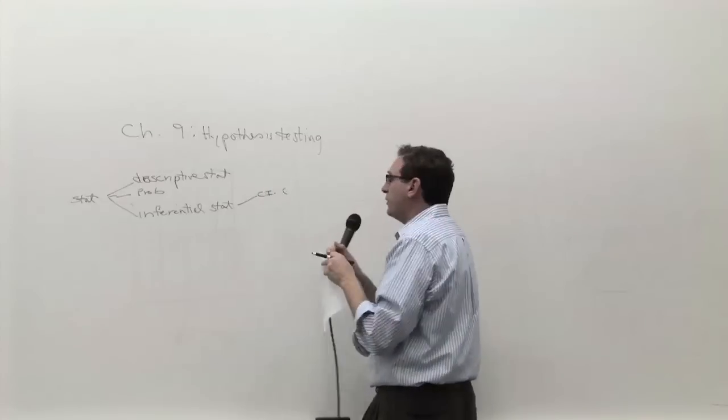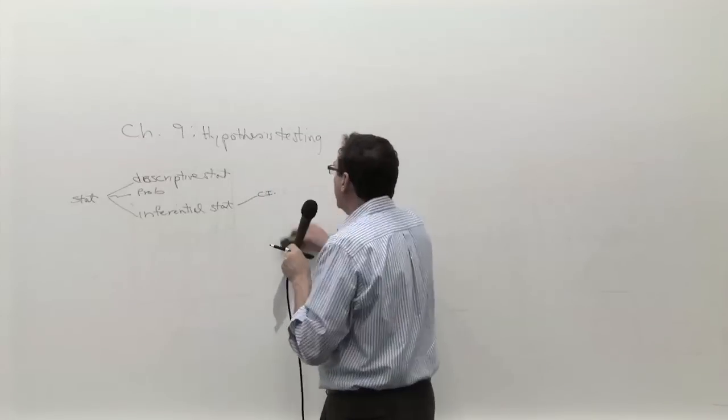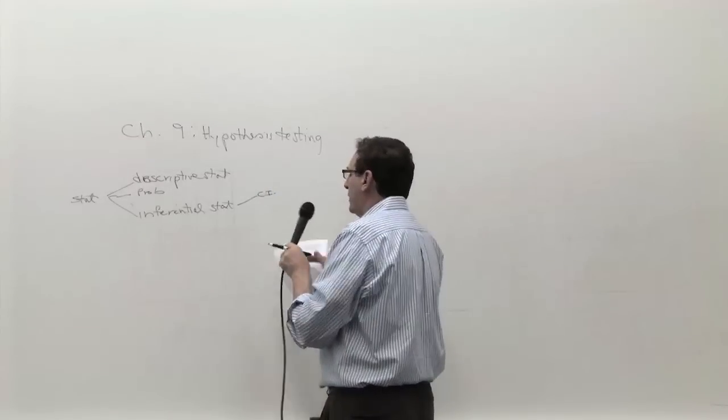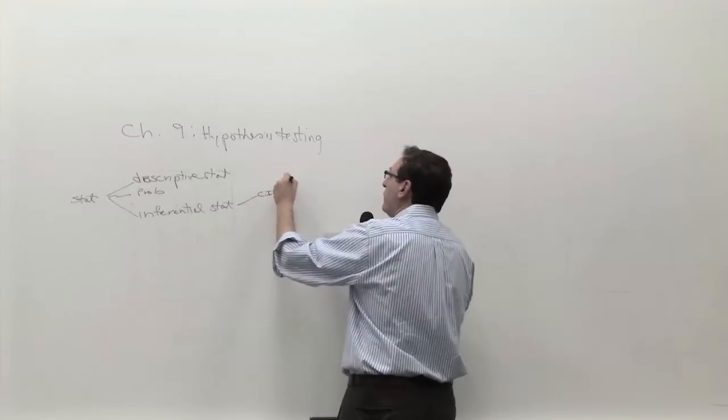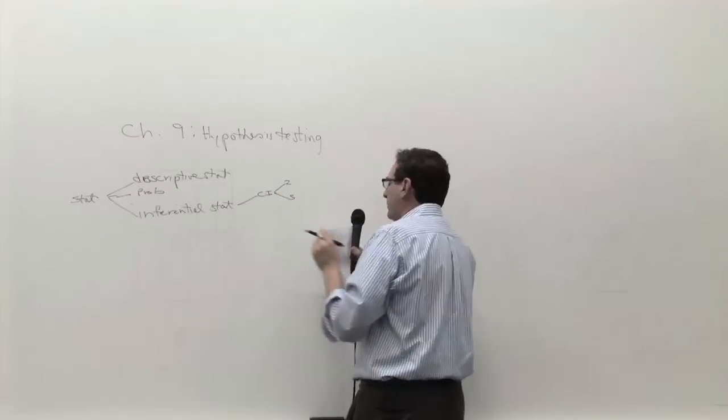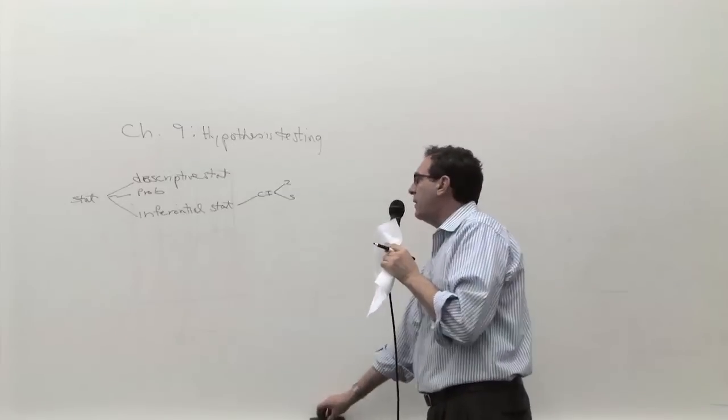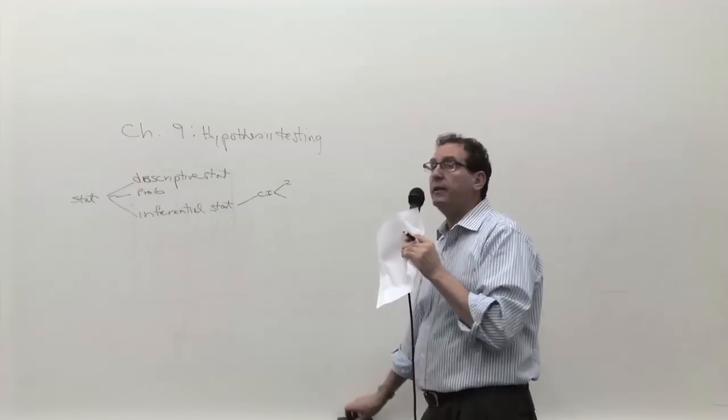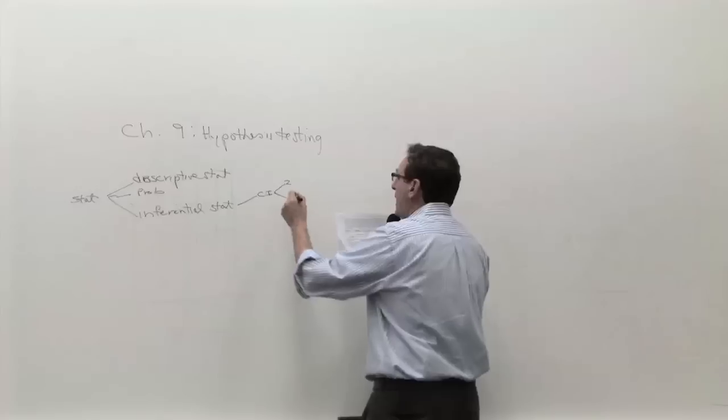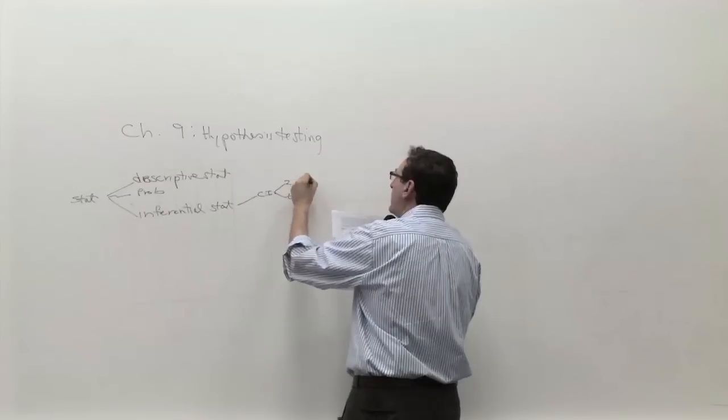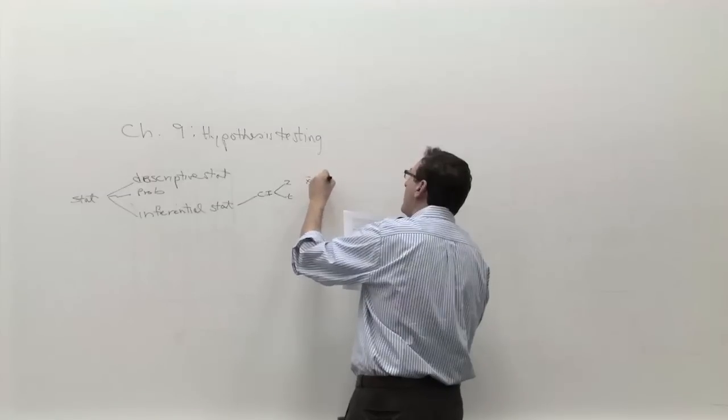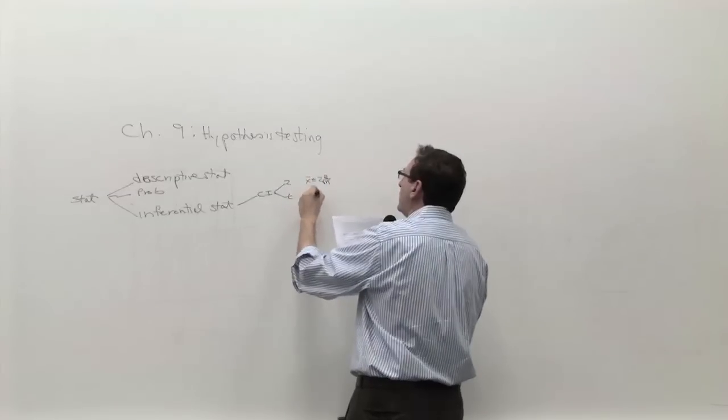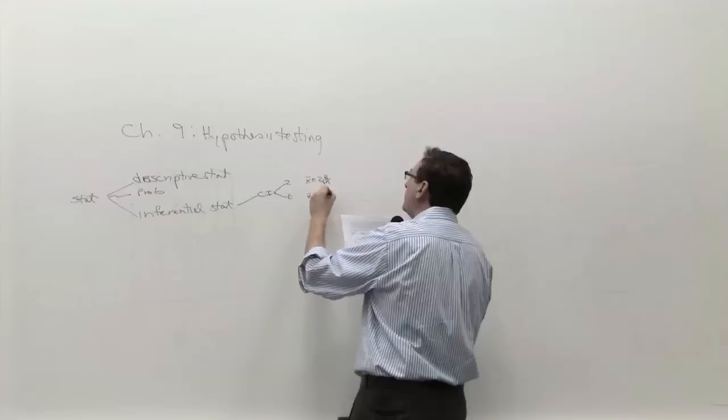There was the Z version and the T version. The Z version, you only needed to know for the spinner assignment, but it wasn't on the test. And the T version, the formula, X bar plus or minus Z times sigma over square root N. And the T version is X bar plus or minus T times S over square root N.